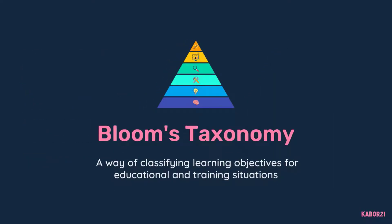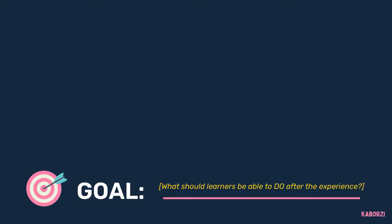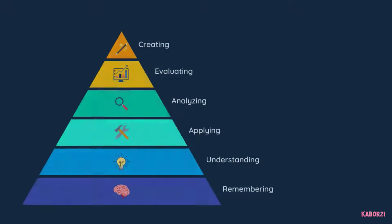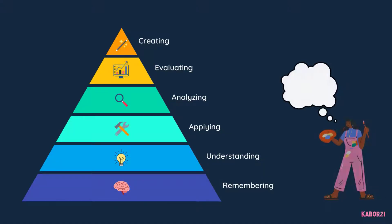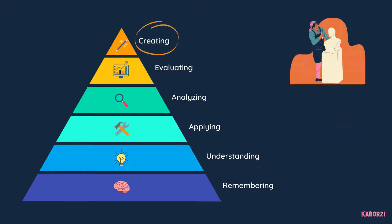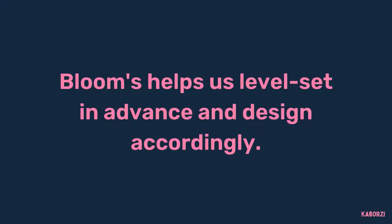Created by Benjamin Bloom in the 1950s, Bloom's taxonomy is a way of classifying learning objectives for educational and training situations. Bloom's helps us design effective learning experiences by first identifying what we expect learners to do with the information after the training is over, and then building our content around those goals. For example, do we expect beginning art students to simply remember a fact, such as that Michelangelo sculpted the David between 1501 and 1504 in Florence, Italy? Or do we expect them to create a sculpture of their own from raw marble after a single lesson? By using Bloom's, and also by communicating well with our stakeholders, we can figure that out in advance and design our curriculum accordingly.